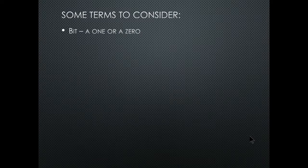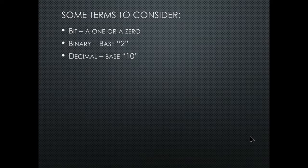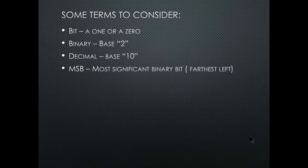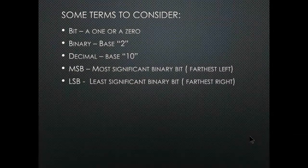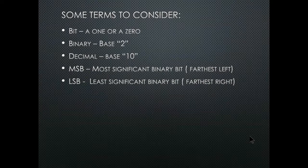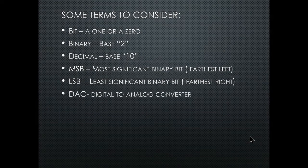Some terms to consider: a bit is a one or a zero. Binary is base two — all ones and zeros, on and off, true and false. Decimal is our normal base 10, zero to nine. MSB is most significant bit, which is the furthest to the left, and the least significant bit is furthest to the right. I'll cover binary as a refresher.